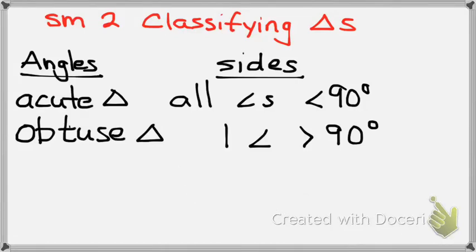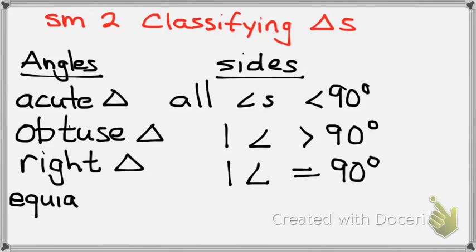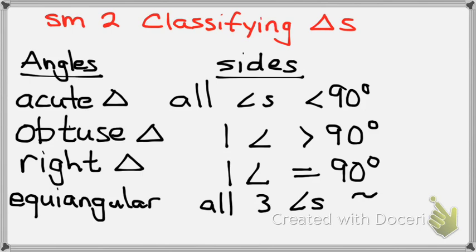The third triangle is a right triangle. So what is a right triangle? One angle equals 90 degrees. And those are the three major big ones, but there is another one — it's called equiangular. And so all three angles are congruent. There are 180 degrees in a triangle, so all three angles would equal 60 degrees.